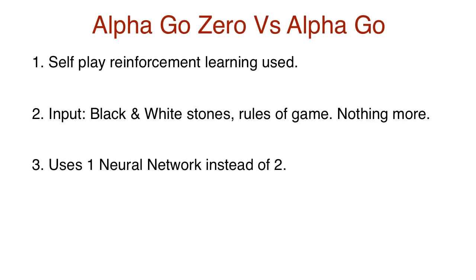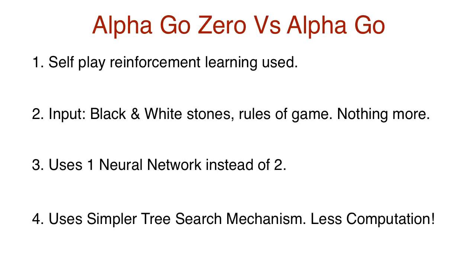Then, unlike AlphaGo, which uses two neural networks, this uses only a single neural network. And the fourth, it uses a simpler search tree mechanism to determine the next best move.